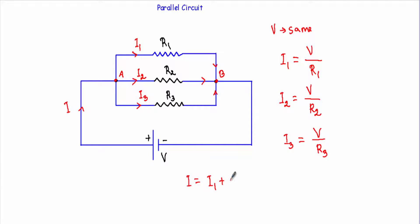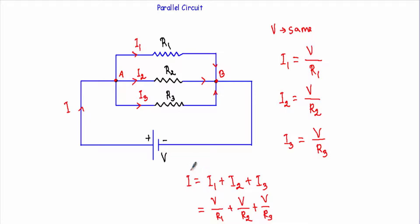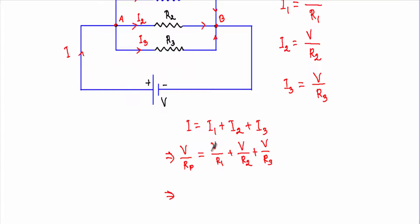So I = I1 + I2 + I3, where I1 = V/R1, I2 = V/R2, and I3 = V/R3. Now considering the A and B terminals, if I consider the total or equivalent resistance as Rp, the total current will be V divided by Rp. Therefore I can write: V/Rp = V/R1 + V/R2 + V/R3. Dividing both sides by V gives the formula for Rp.